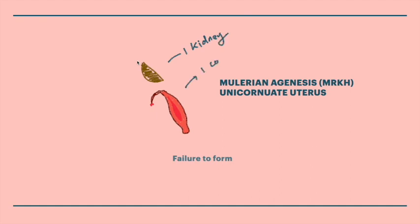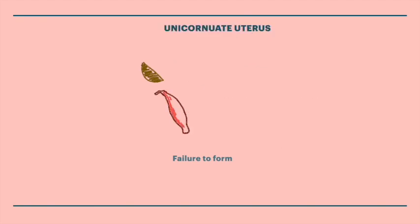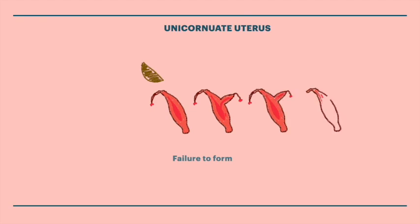One kidney corresponds to one horn of the uterus. This failure-to-form group of Müllerian anomalies consists of Müllerian agenesis, such as in Mayer-Rokitansky-Küster-Hauser syndrome, and the unicornuate uterus. There are several types of unicornuate uterus: a rudimentary horn with a connected endometrial cavity, a rudimentary horn with no connection, and a unicornuate uterus with a non-cavitary rudimentary horn.